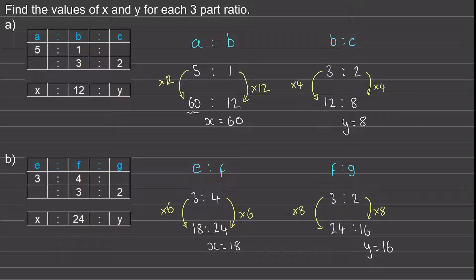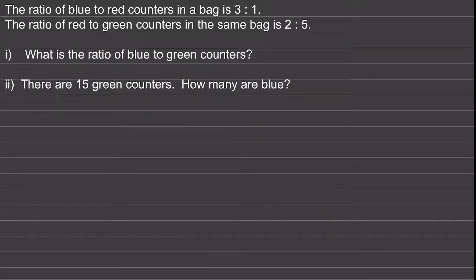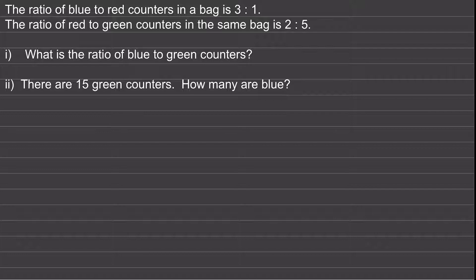Let's try one more question. This is an exam style question where we've been told that the ratio of blue to red counters in a bag is three to one, and the ratio of red to green counters in the same bag is two to five. We've been asked to work out the ratio of blue to green counters, and then for part two, when there are 15 green counters, how many are blue? Do you want to try this question yourself, and when you come back we can go through a worked solution.